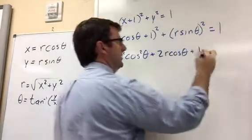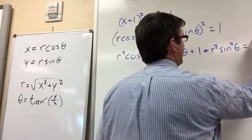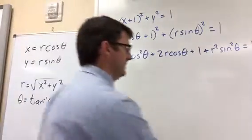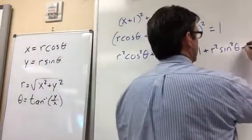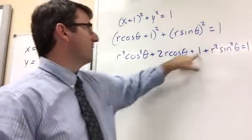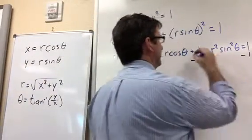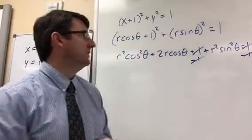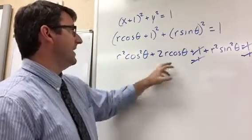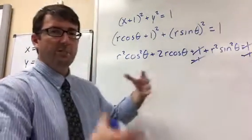Over here we have (r sinθ)², which is r² sin²θ, and then equals 1. Now we have a 1 on both sides, so subtracting 1 from both sides cancels those out and we can get rid of them.